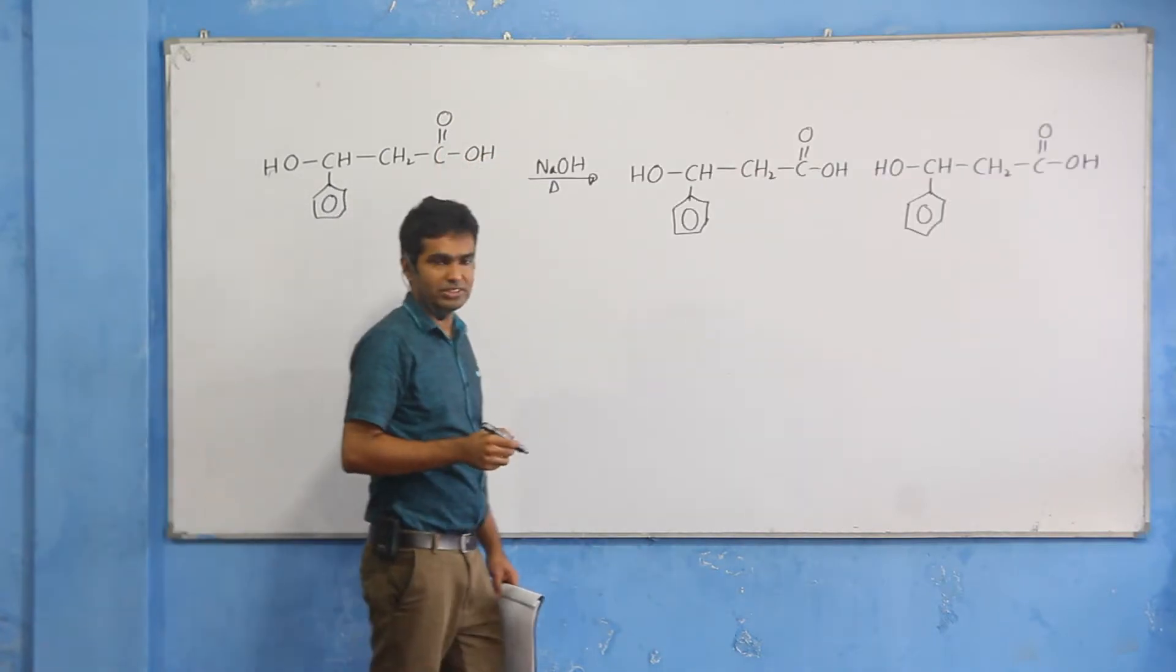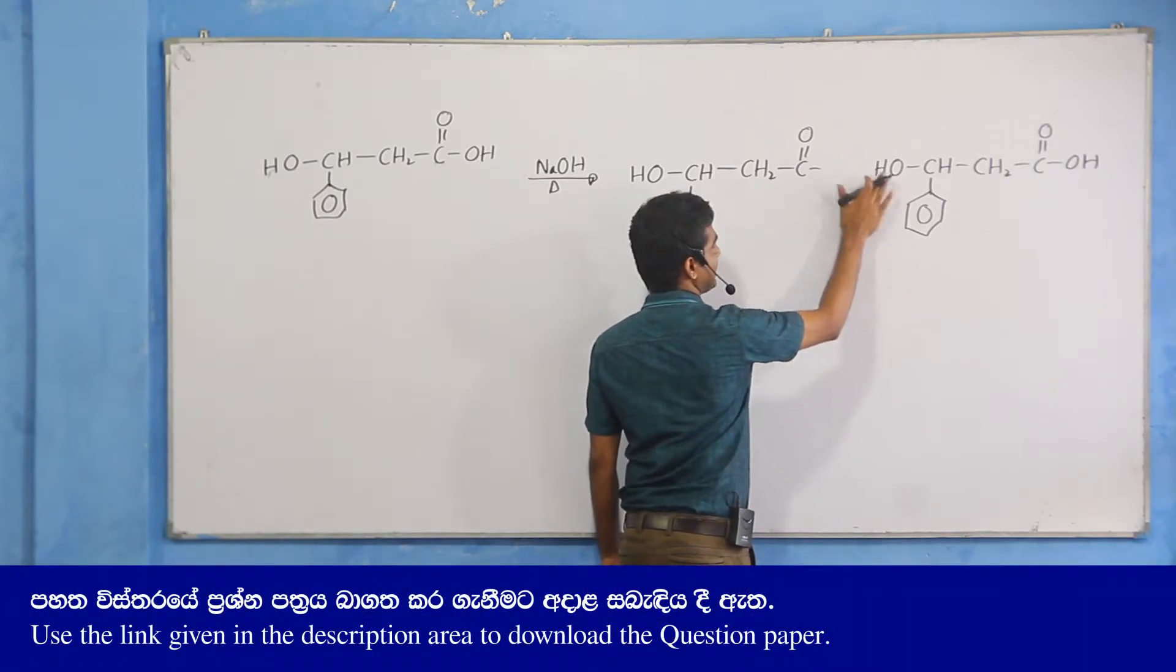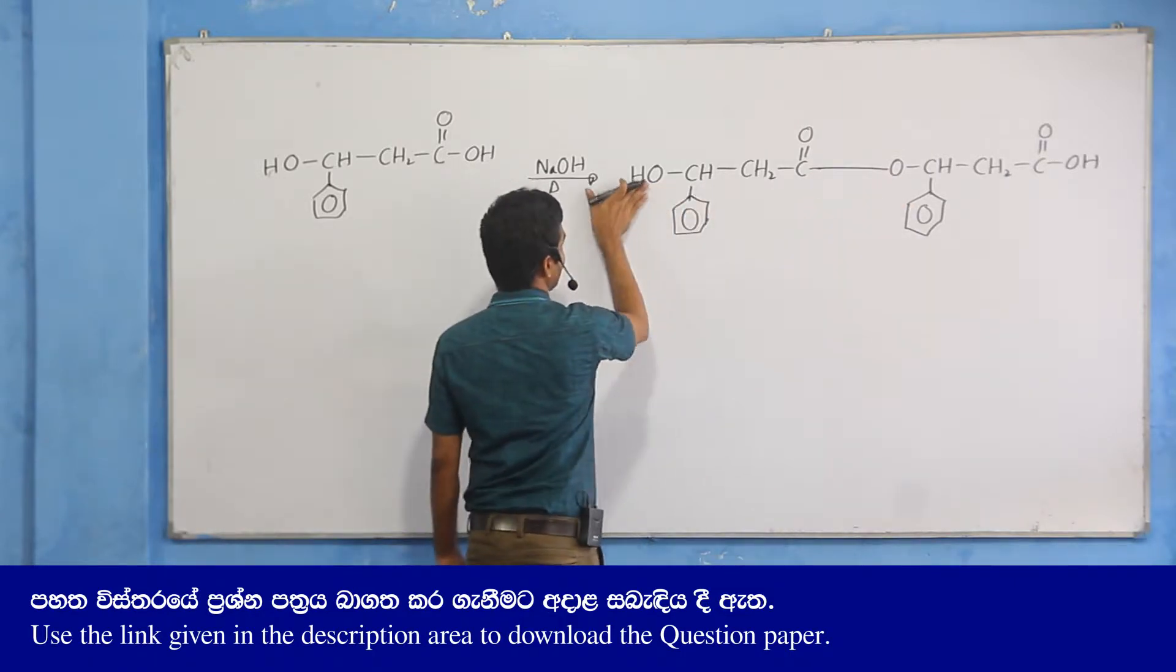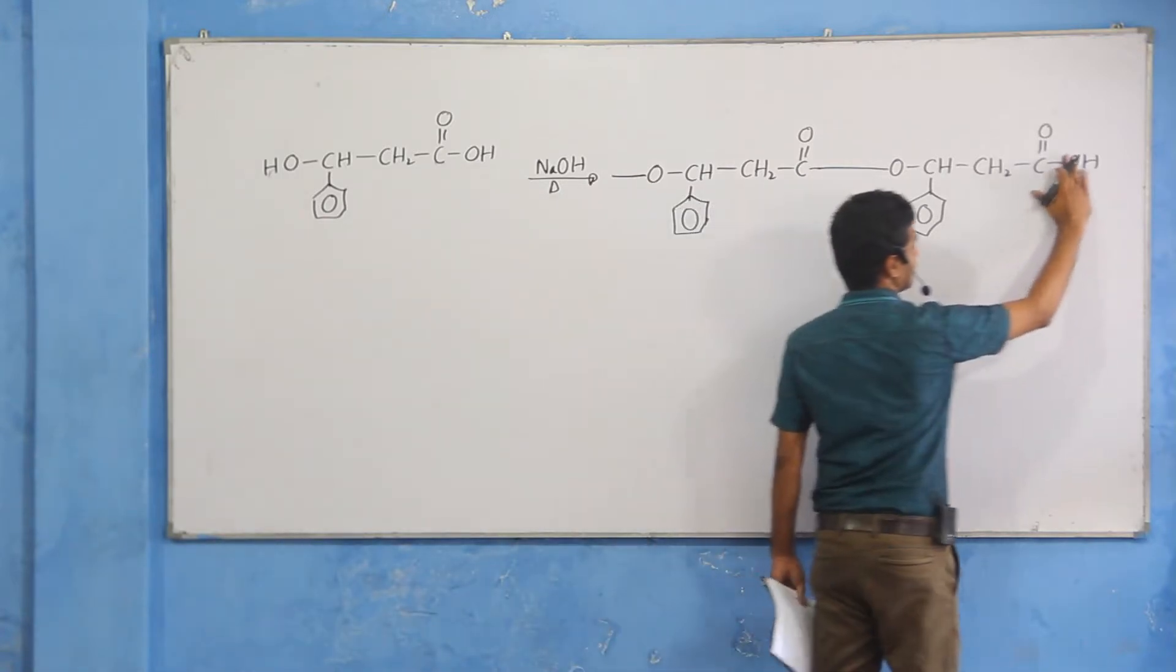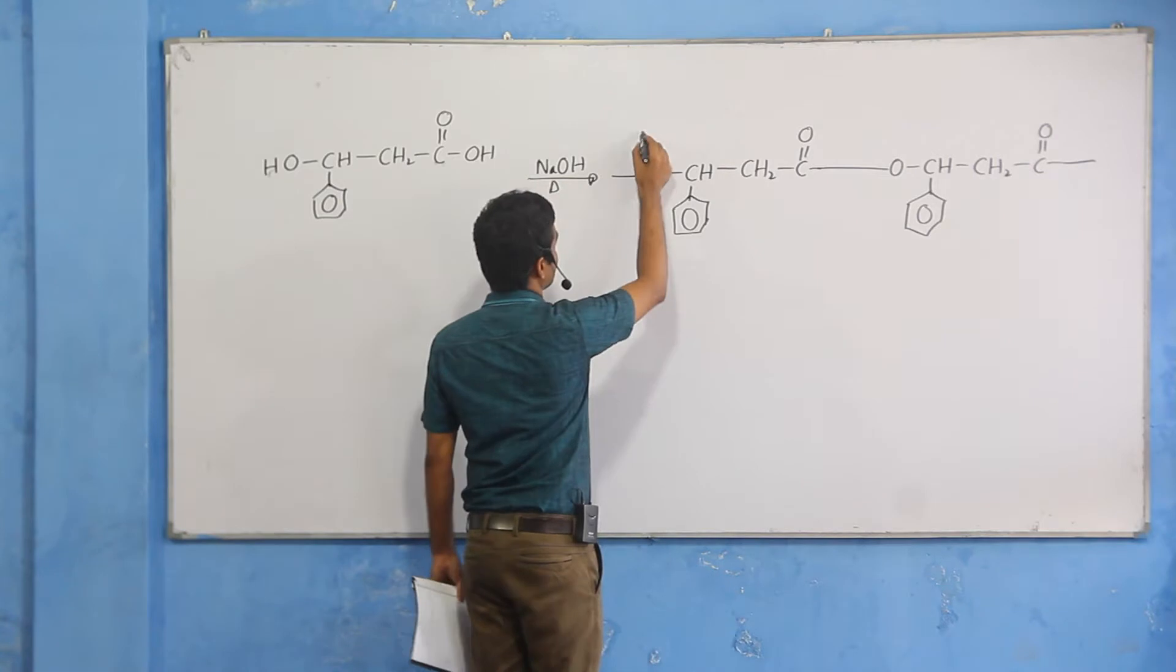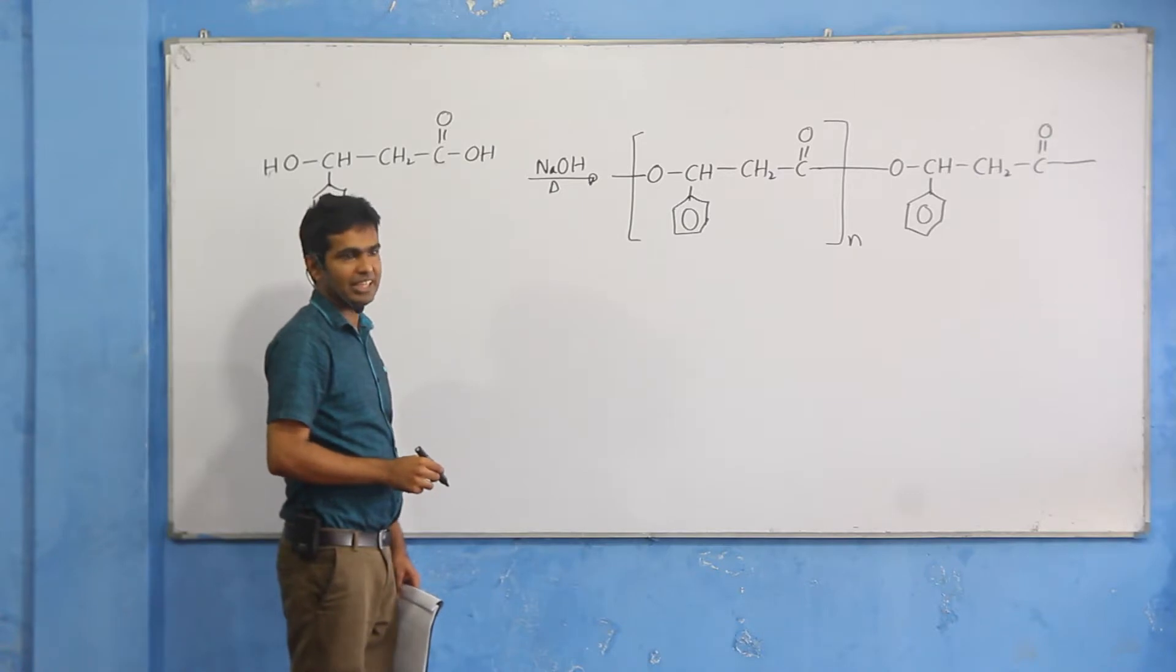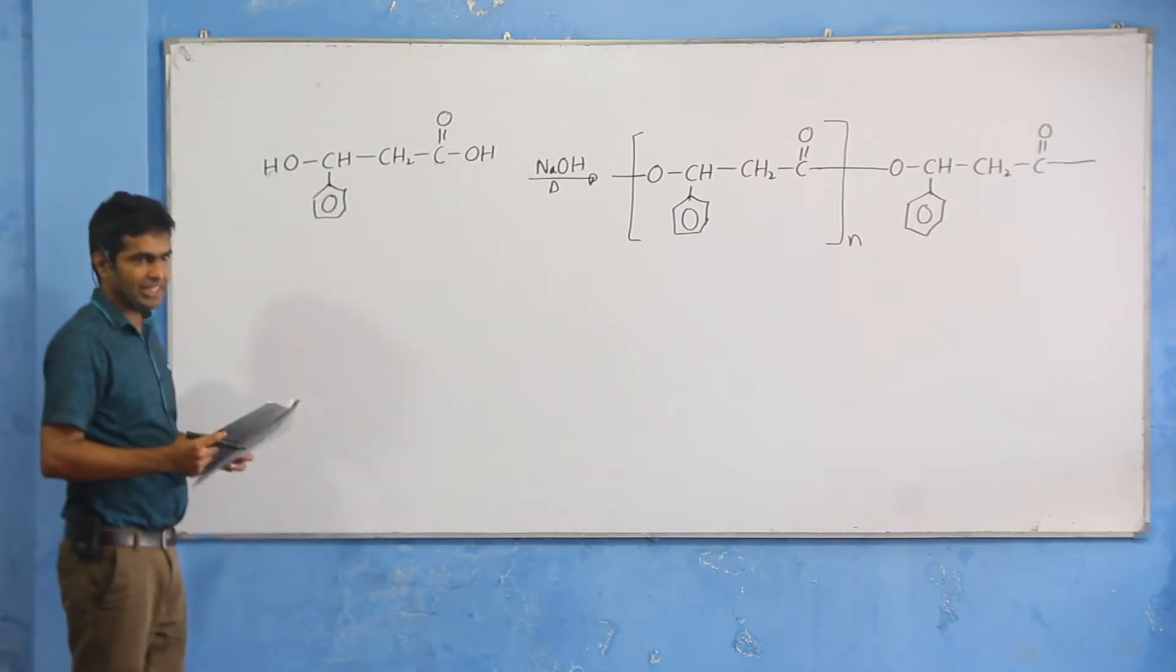When you add sodium hydroxide to the compound, the CO2 and OH groups form alcohol. The ester bonds break in the polyester. It's a polyester. Where is the polyester?